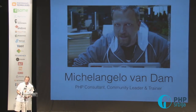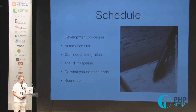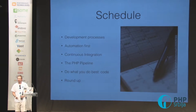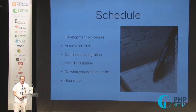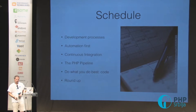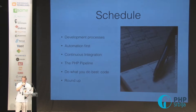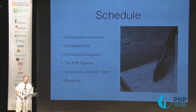This talk is about what we're going to do today. First, look at the development processes. Then we're going to take these development processes and take automation first. Automation first cannot be applied when you don't have continuous integration. And then for the continuous integration we use a pipeline to spread everything out, because the focus is that you do what you do best, which is coding.